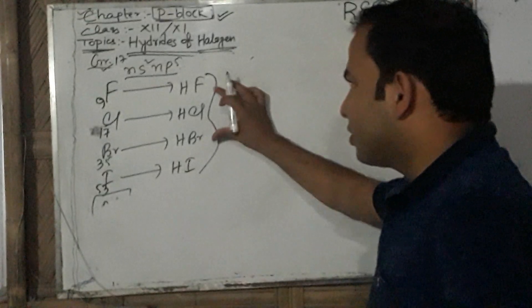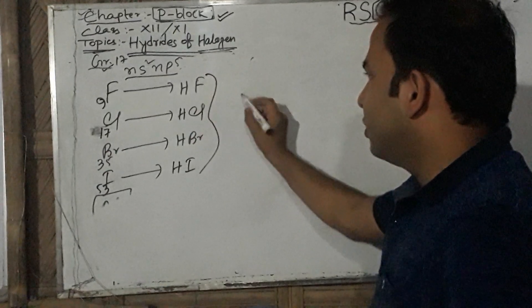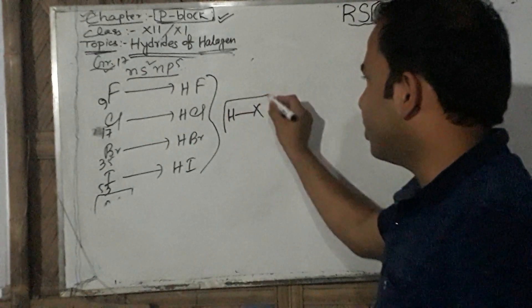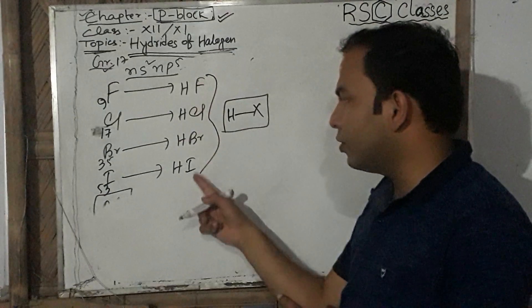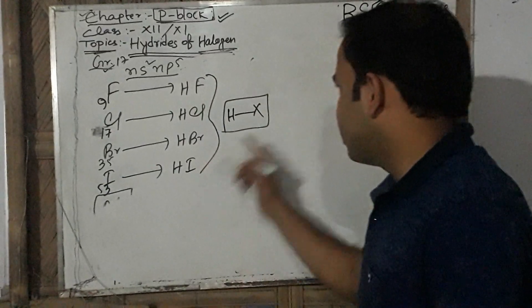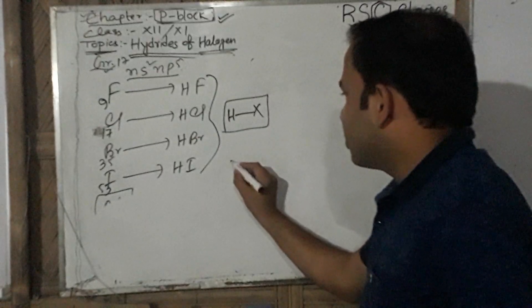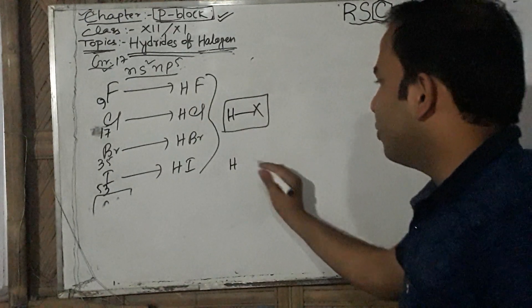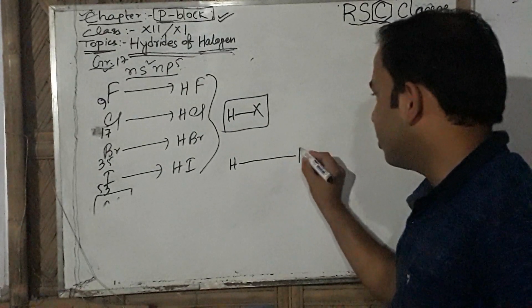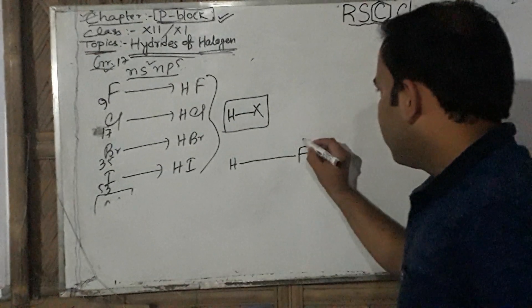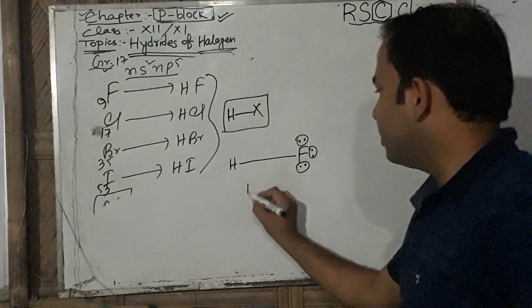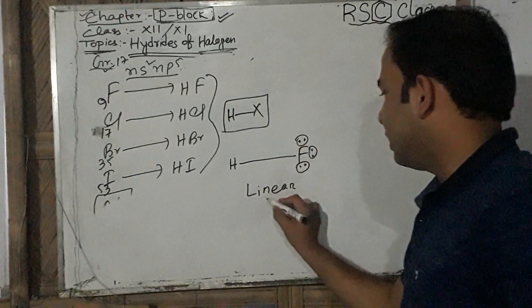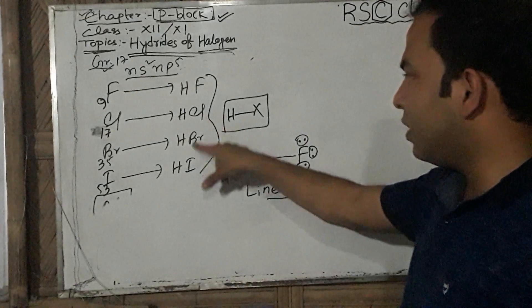First, we discuss the structure of halogen hydrides, represented generally as HX — where H is hydrogen and X is the halogen atom. For example, HF has one hydrogen and one fluorine. All halogen hydrides have a linear shape.